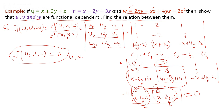Therefore the determinant is zero, which means the Jacobian of (u, v, w) is zero. So u, v, w are functionally dependent — these three functions are dependent on each other.